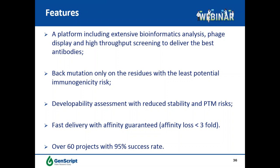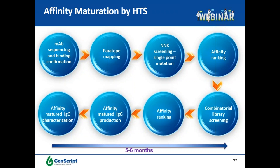Affinity maturation is another lead optimization process aimed to increase the affinity of selected antibody leads. Leads from the hybridoma approach typically have reasonably high affinity with KD in nanomolar to subnanomolar range, so affinity maturation is often not necessary, especially with our affinity-guaranteed optimization process. However, in some cases where obtained leads have relatively low affinity — such as from library campaigns or transgenic animals — or where the application requires extremely high affinity, affinity maturation is required.